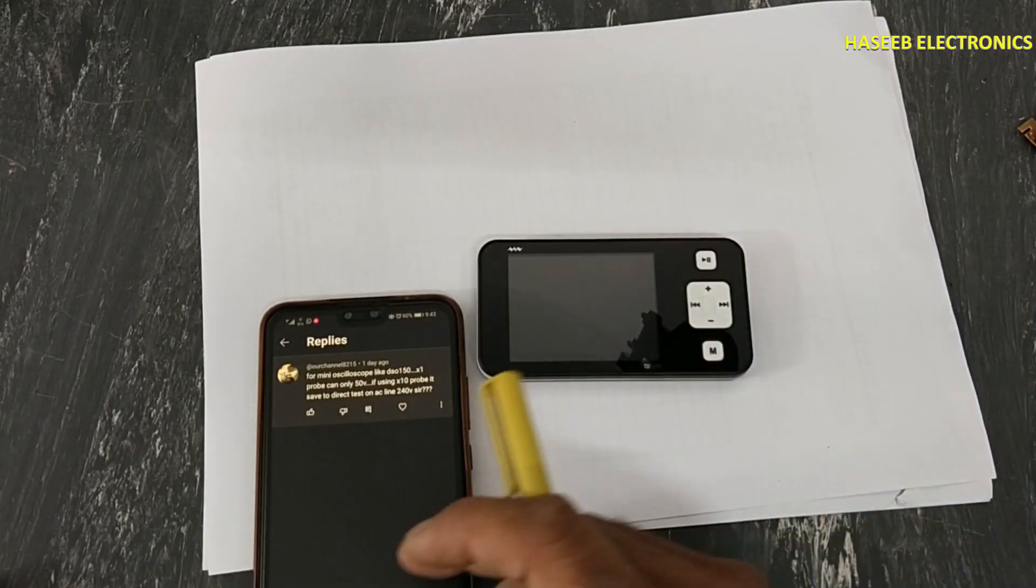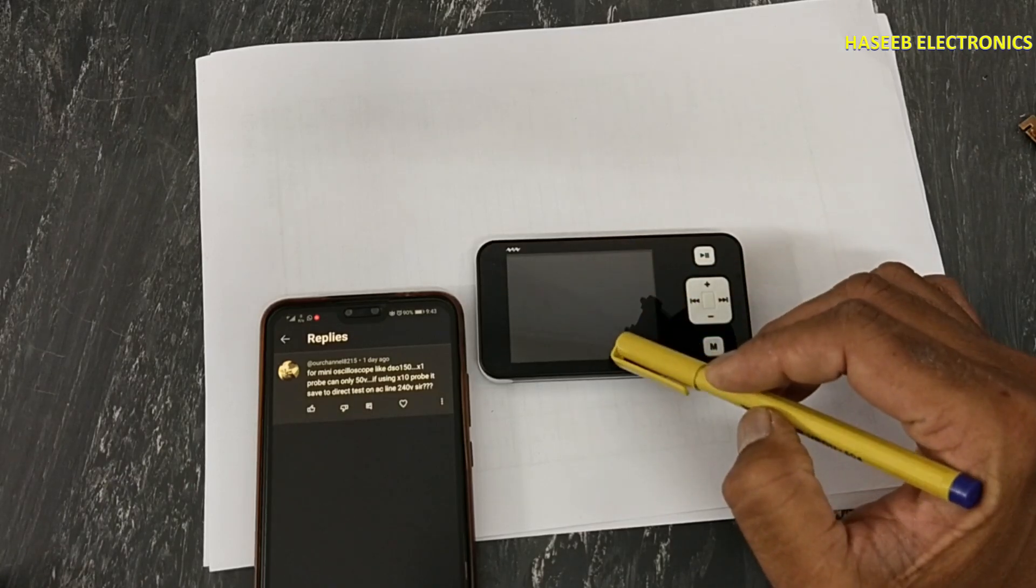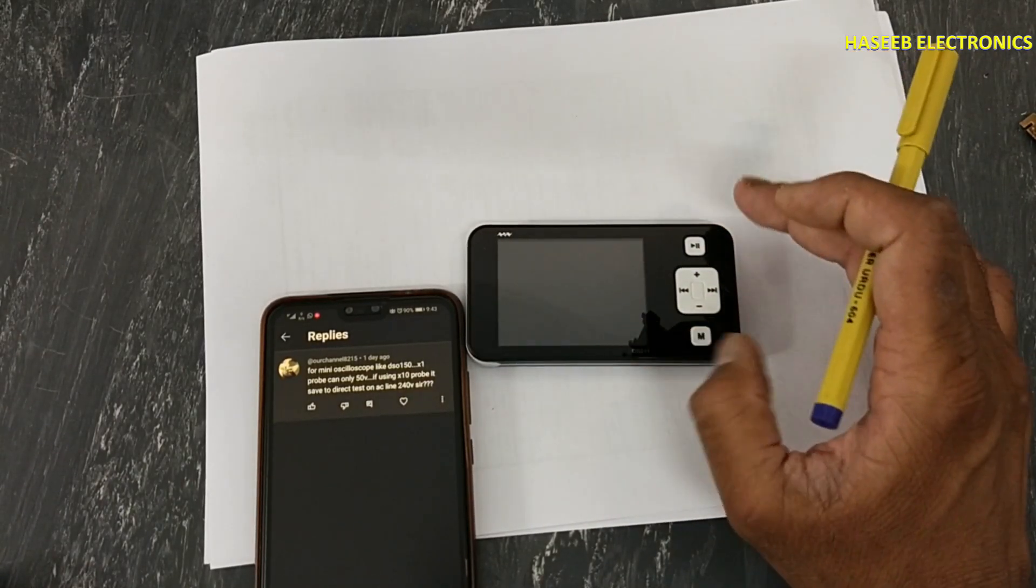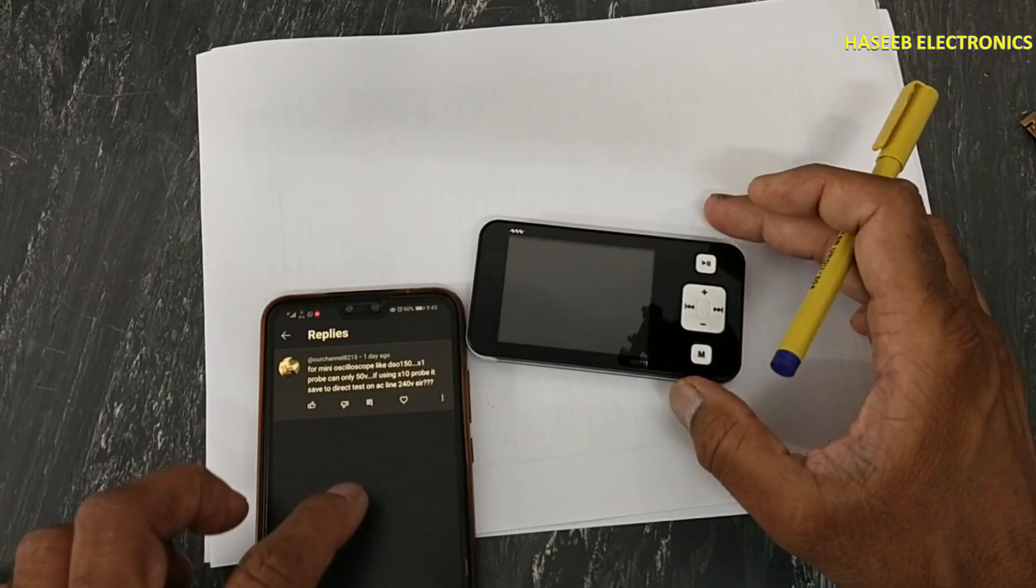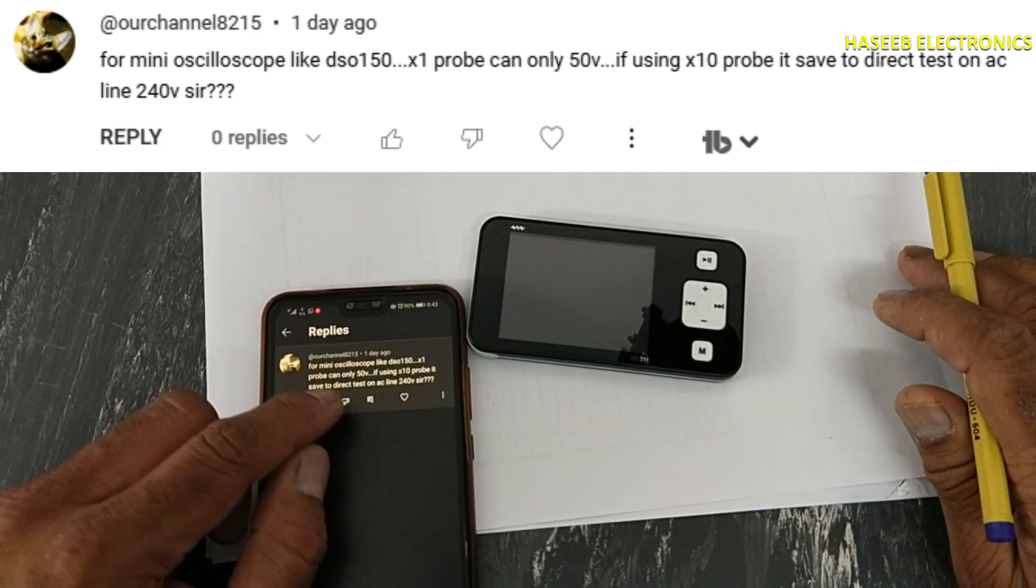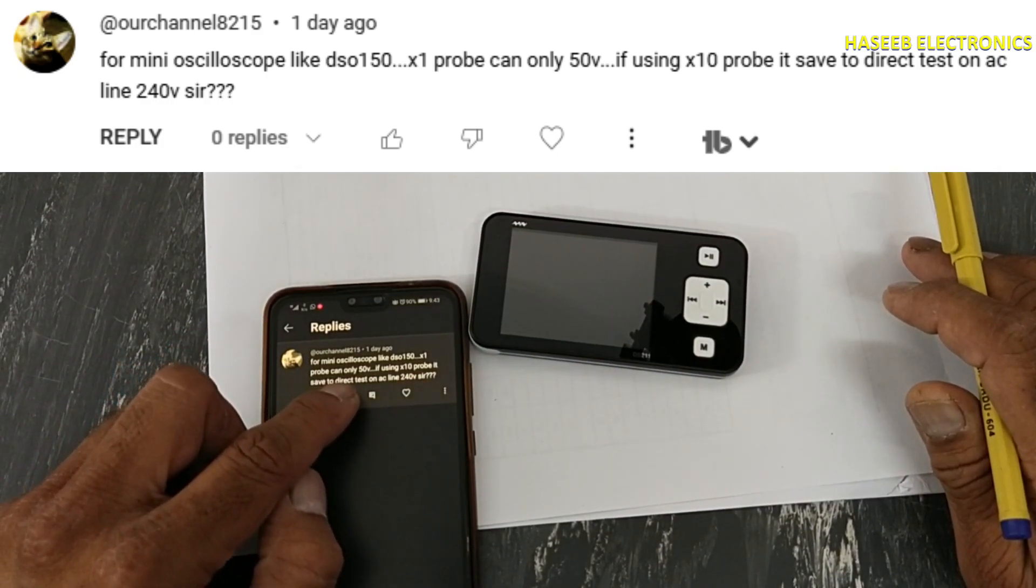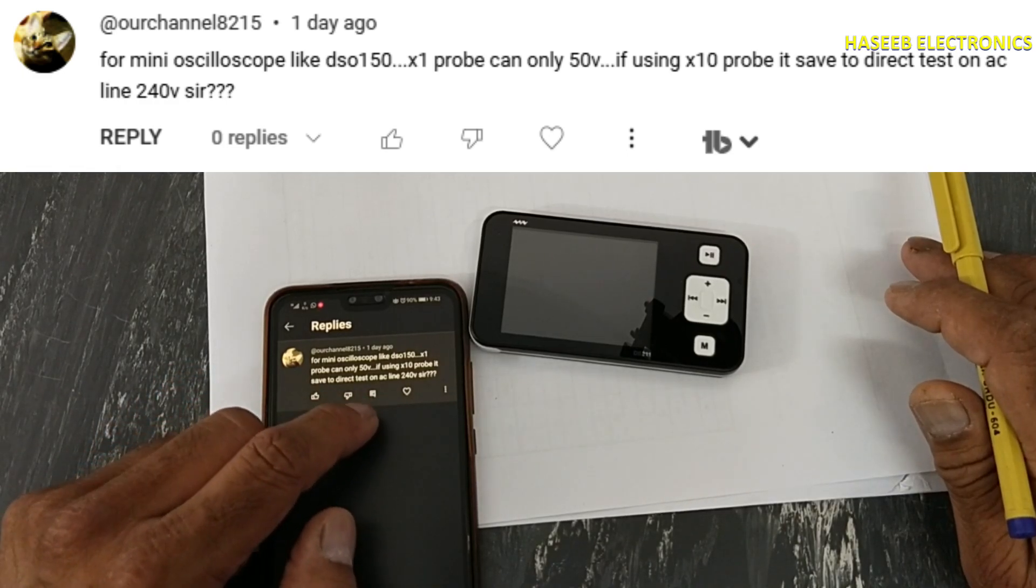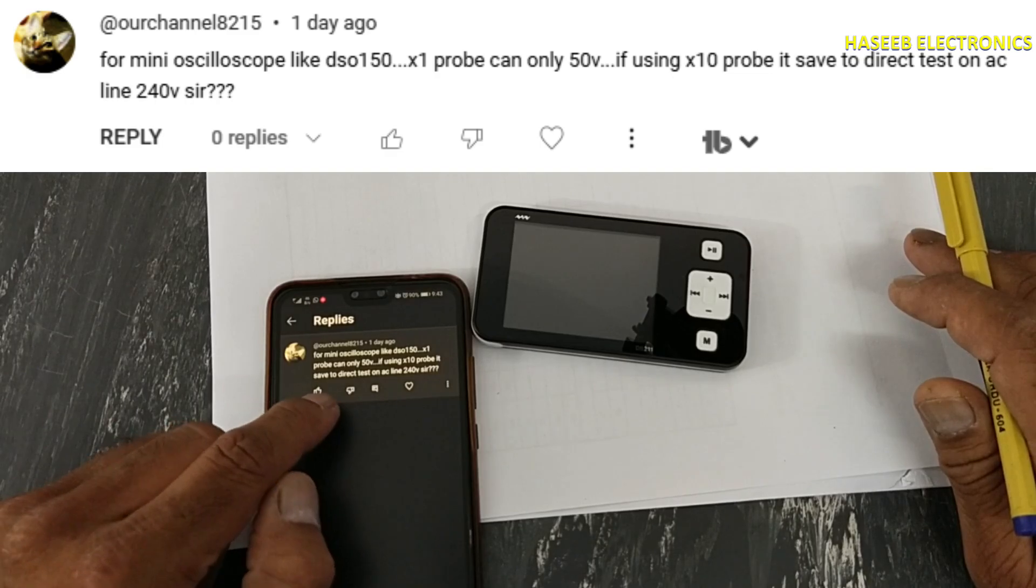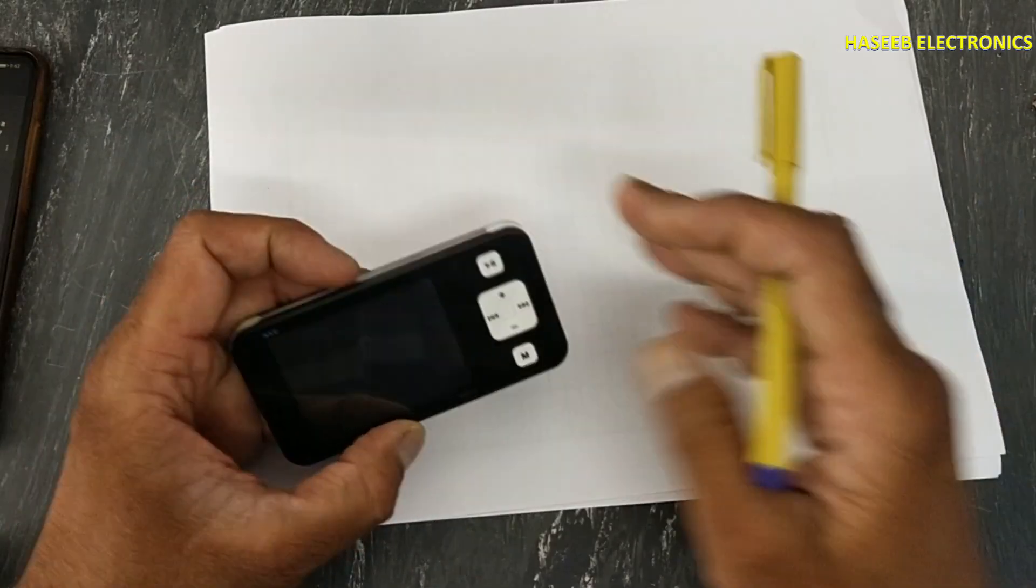Friends, welcome back to my channel. How can we know what is the maximum voltage value which we can measure on any oscilloscope? This is a question from my viewer asking: for mini oscilloscope like DSO 150, x1 probe can only read 50 volts. If using 10x probe, is it safe to test directly on 240 volts?